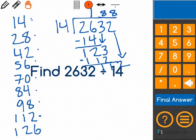So my correct answer for 2,632 divided by 14 is 188.